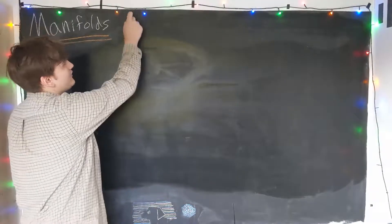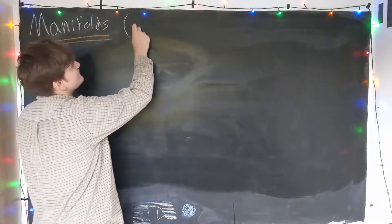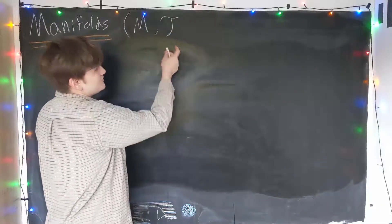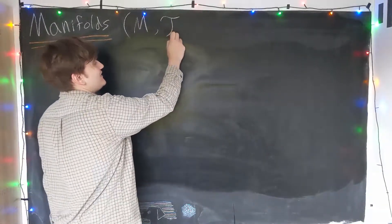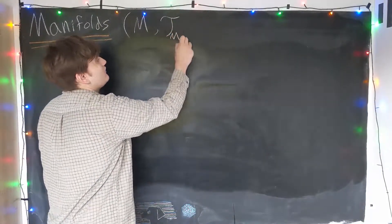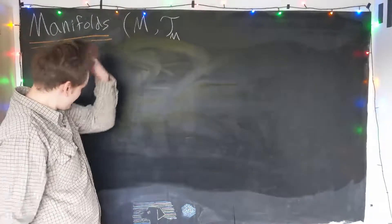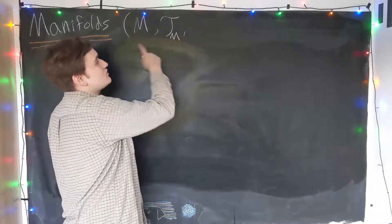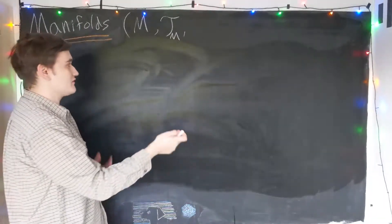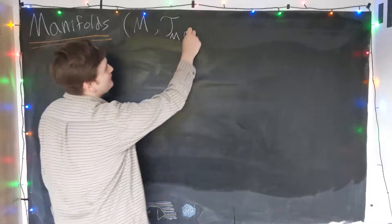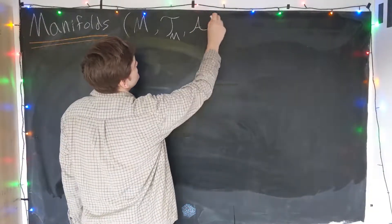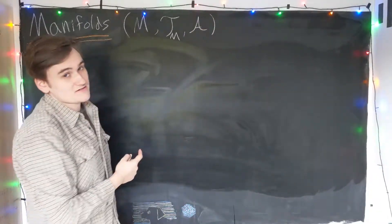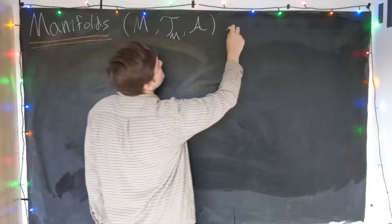We've seen that a manifold is a topological space, which is a set with a topology. This topological space can be covered by a family of what we call charts, and the whole collection of all these charts is called the atlas.